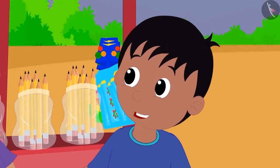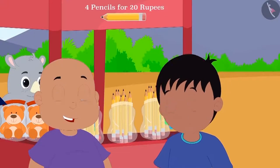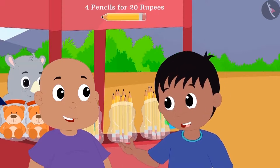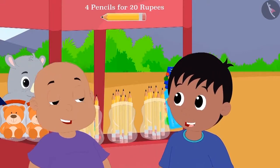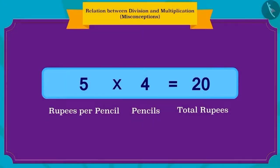Raju got excited when he heard about the relation between division and multiplication. Raju said to Bablu that he can write this multiplication like this also: 5 rupees per pencil and 4 pencils, so the total amount is 20 rupees. Children, has Raju written it correctly?